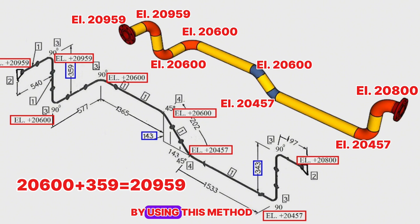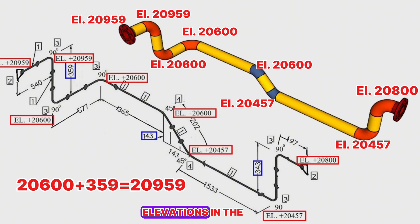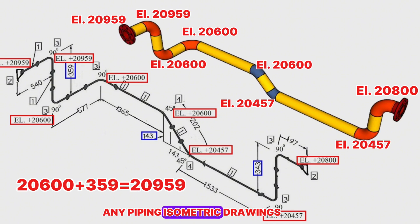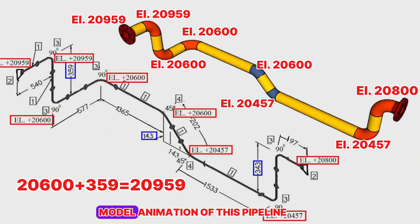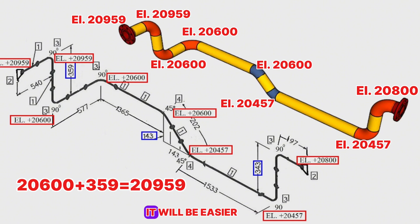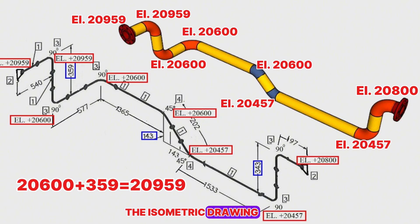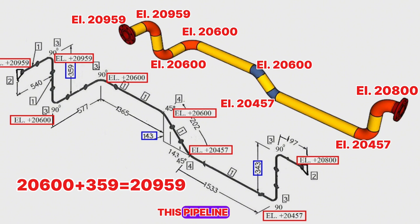By using this method you can easily check elevations in any piping isometric drawing. By watching the 3D model animation of this pipeline, it will be easier for you to read and understand the isometric drawing, elevations, and arrow directions of this pipeline.